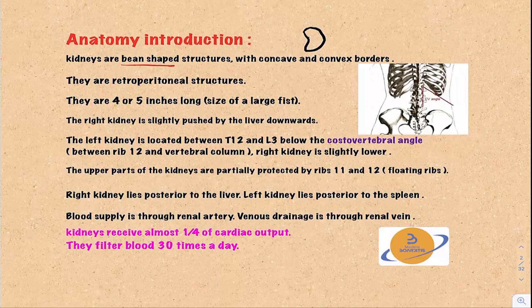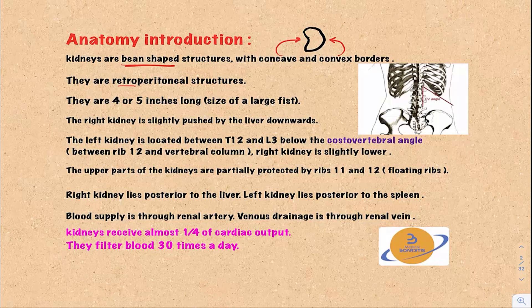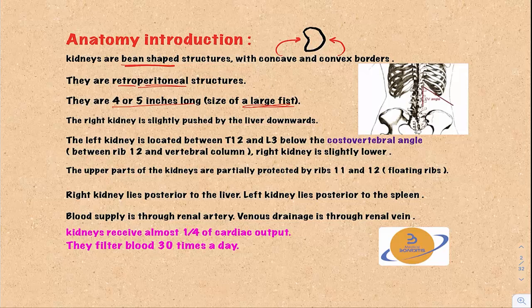The kidneys are bean-shaped structures with a concave and a convex border. They are located behind the peritoneum — we call this retroperitoneal. So the kidneys are retroperitoneal structures. They are 4 or 5 inches long, about the size of a large fist. The right kidney is usually below the level of the left kidney.